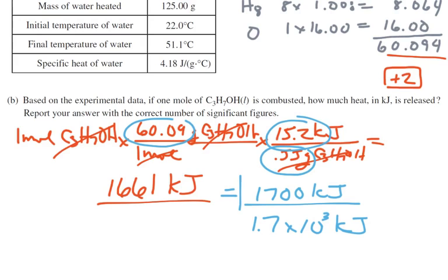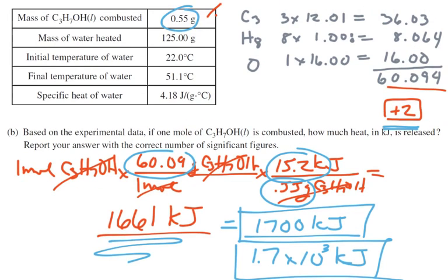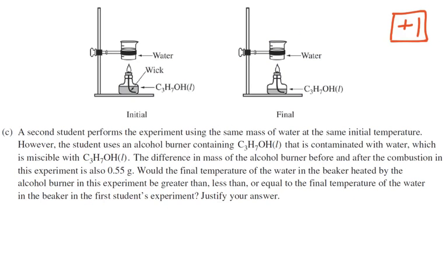Now, on this part of the problem, we had two points. One point was for getting this right answer here, and then the other one is for reporting it to the correct number of significant figures. So we had to reduce it down to two significant figures because that was the least precise number in the problem.